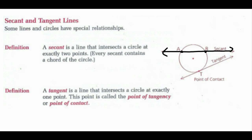A tangent line is a line that intersects a circle at exactly one point. The point that it touches is called the point of tangency or point of contact. Line T is the tangent line, and the point of contact is point T — it touches the circle at exactly one point.